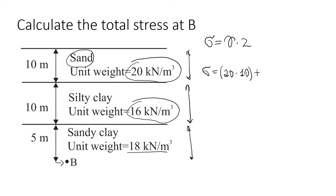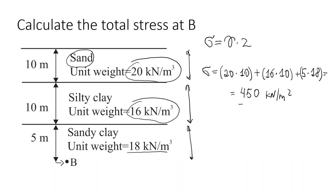Then we add the second layer: unit weight of 16 times the thickness of 10 meters. Down to point B there is 5 more meters, multiplied by the unit weight of 18 kN per cubic meter. Summing all contributions gives us approximately 450 kN per square meter, which is the total stress acting at point B.